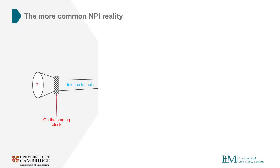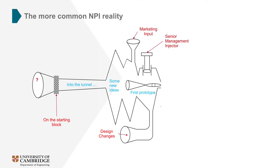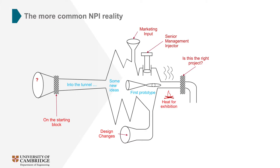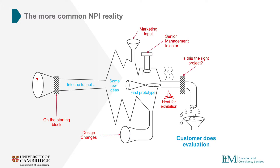NPI processes often begin with too few ideas and insufficient screening. New ideas are introduced part way through the process, and input from critical stakeholders such as marketing and senior management arrives at sporadic and unhelpful times. Late design changes are made as a result of poor upfront project definition, and bosses press for early product release. A final go or no-go decision is often implemented just as the project is available to launch, which can result in significant cost and wasted effort. As products drip out of the end of this unstructured process, customers are often left to find the faults.